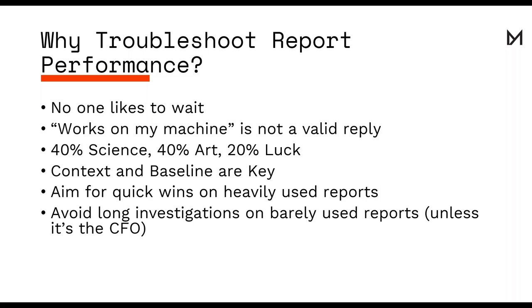Performance troubleshooting can be divided into a scientific formula: science — knowing what you have to do — art — how you should do it — and sheer luck, which should not be neglected. You cannot know every possible root cause, so you will have to look for certain things. It's also very important to keep context and baseline in mind: are we looking at 85 million rows, or an Excel file with 25 records?